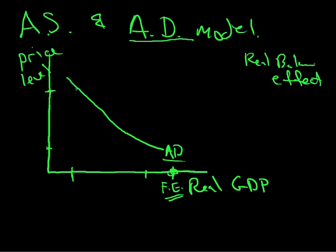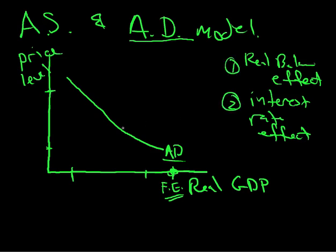Then there's the interest rate effect. As price levels go up, given a constant supply of money, meaning a static supply of money, then what's going to happen? As people demand more money to buy these things that have a higher price level, interest rates go up. This is called the interest rate effect. And when interest rates go up, you can buy less. So you have the real balances effect, that's 1, and the interest rate effect, that's 2. That gives us this sloping aggregate demand line.